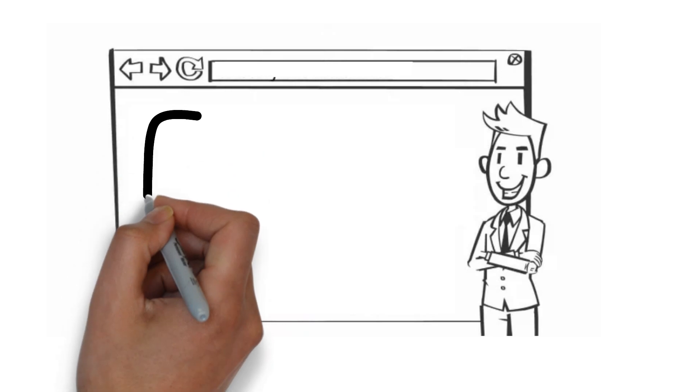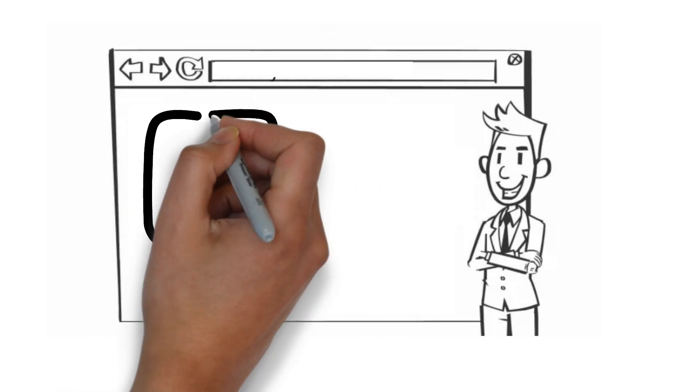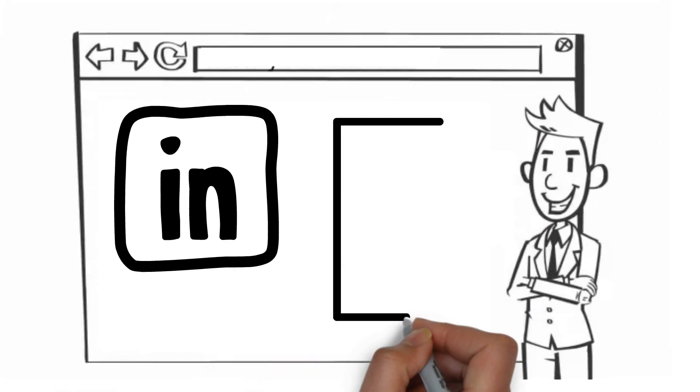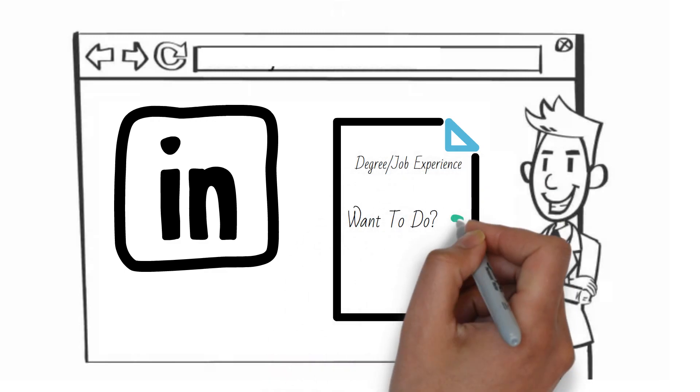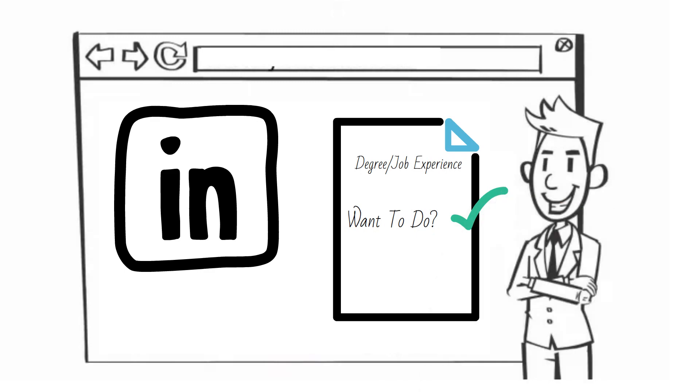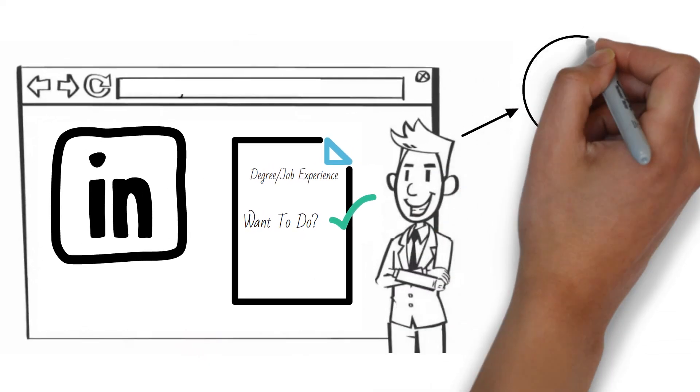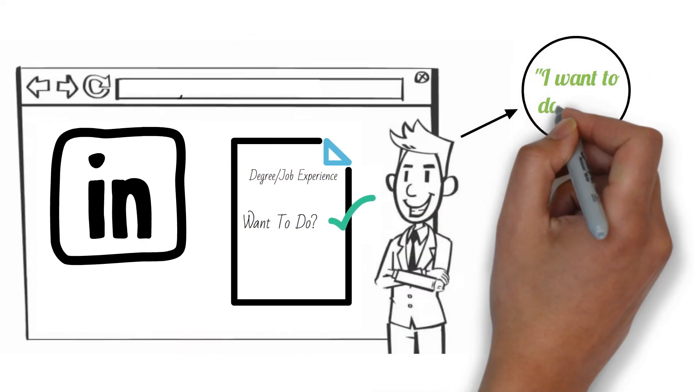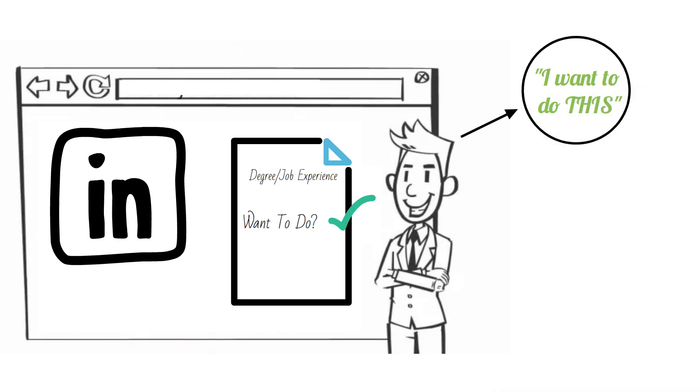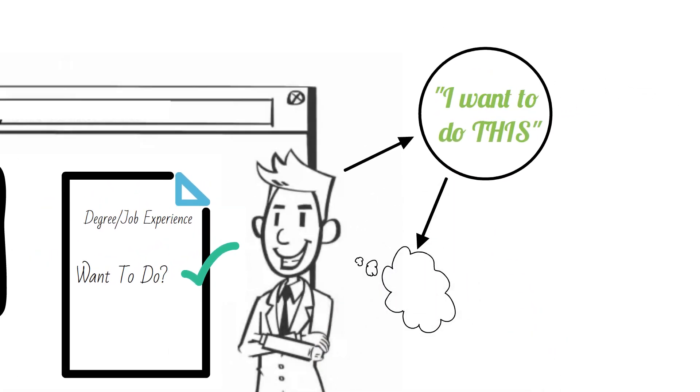On platforms like LinkedIn, where people showcase their professional careers, most profiles talk about what they have done rather than what they want to do. But it's important to be bold enough to show your aspirations—not to lie, but to let others know what you truly desire. Your resume highlights what you have done in the past, but it doesn't reflect your future goals.